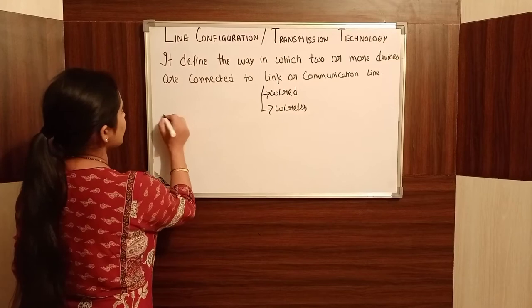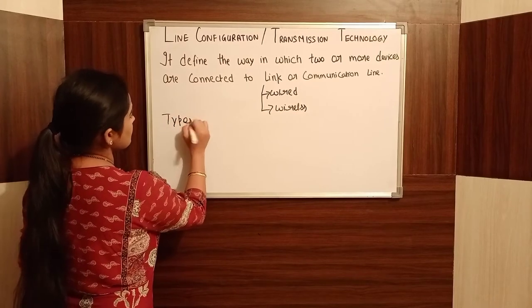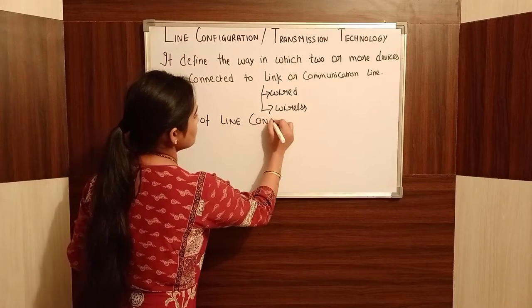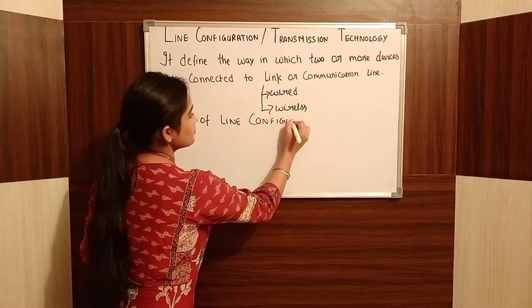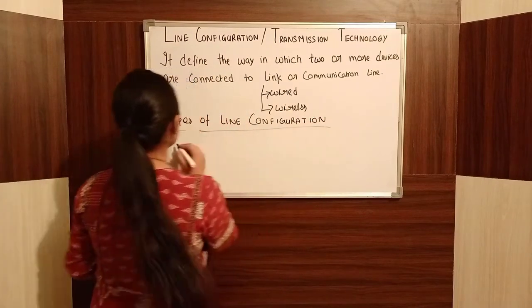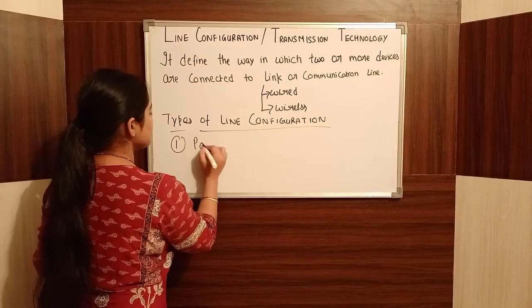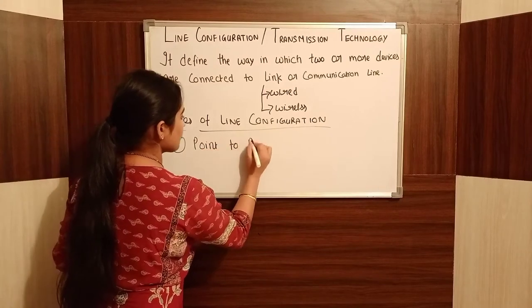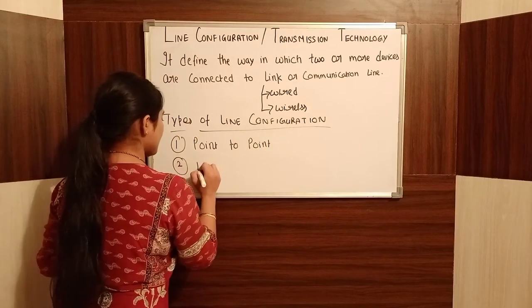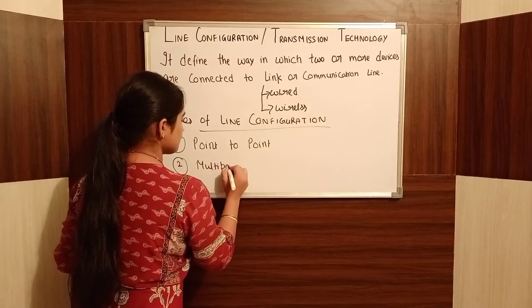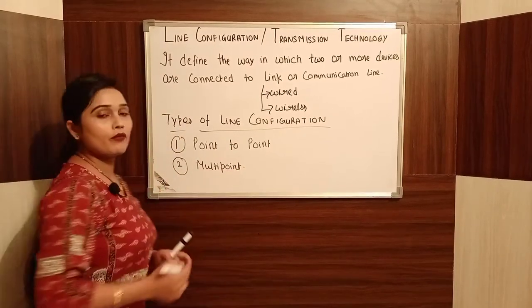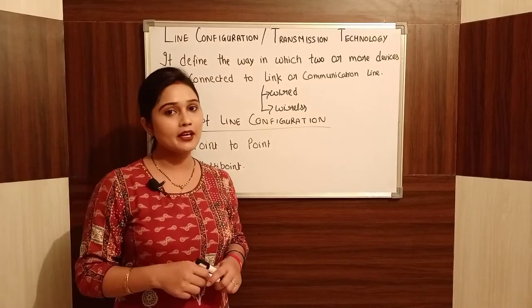The types of line configuration are: first, point-to-point, and second, multi-point. We have these two types, and we will look at them one by one.